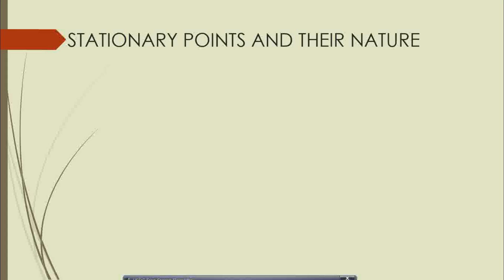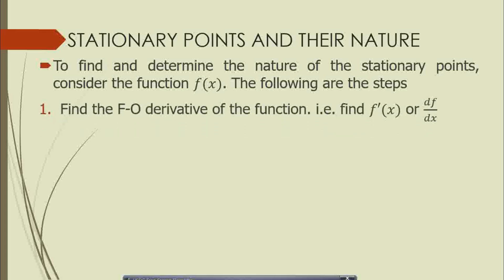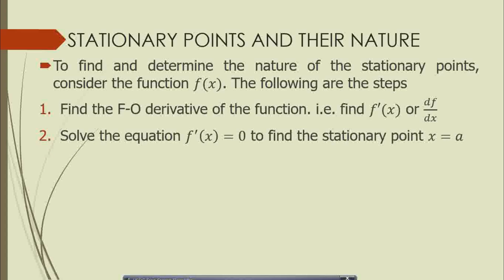Let's go through the step-by-step process of finding and classifying stationary points. Given a function f of x, the first thing is to find the first order derivative — differentiate f of x with respect to x. Then apply the first order condition by equating the first order derivative to zero. This gives you the value of x at the stationary point. Once you plug that value of x back into the function, you get the value that f of x takes at that stationary point.